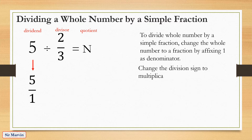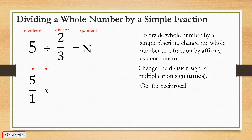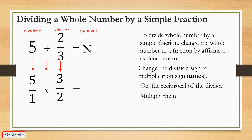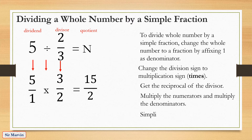Change the division sign to a multiplication sign. Then get the reciprocal of the divisor — 2 thirds becomes 3 over 2. Then multiply the numerators and multiply the denominators: 5 times 3 equals 15, and 1 times 2 equals 2.